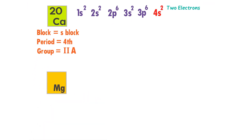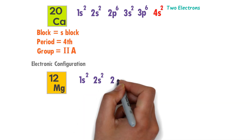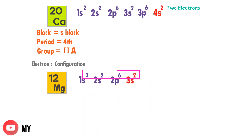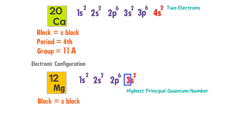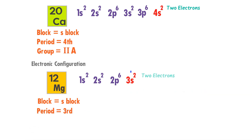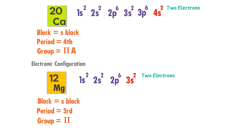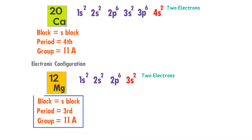Thirdly, consider magnesium — its atomic number is 12. The electronic configuration of magnesium is 1s2, 2s2, 2p6 and 3s2. If I add these electrons, I get 12 electrons. Here the last orbital of magnesium is S, so magnesium is an S block element. The highest principal quantum number of magnesium is 3, so its period is 3rd. There are two electrons in the S orbital, so the group number of magnesium is 2nd. The last orbital is S, so the subgroup of magnesium is A. Thus magnesium is present in the third period and second A group.